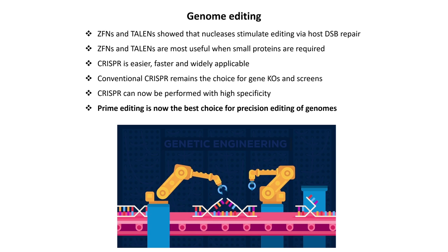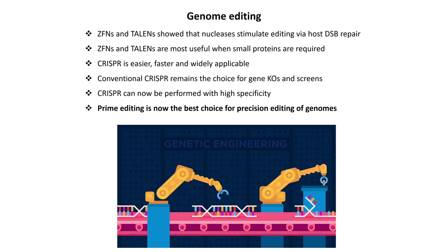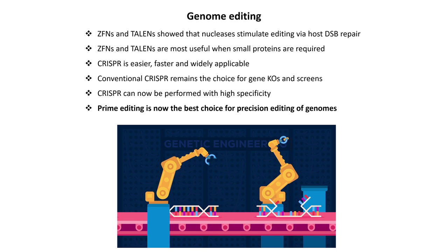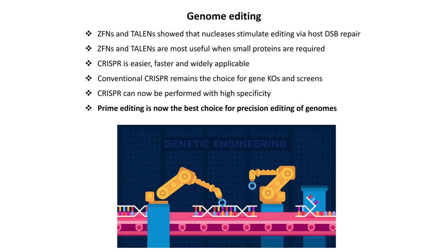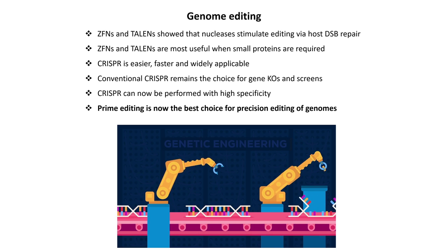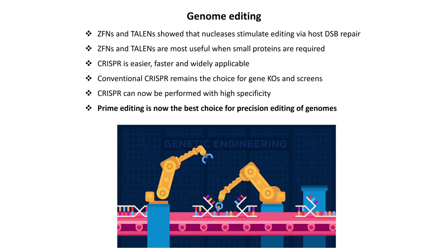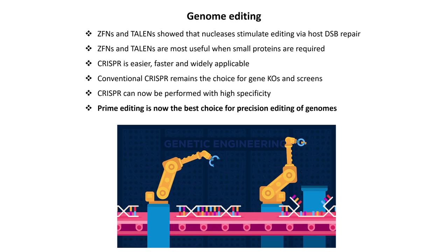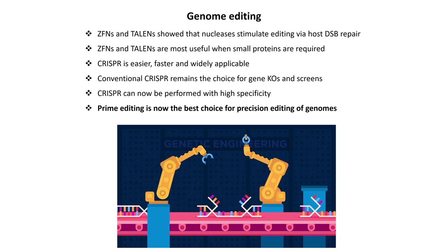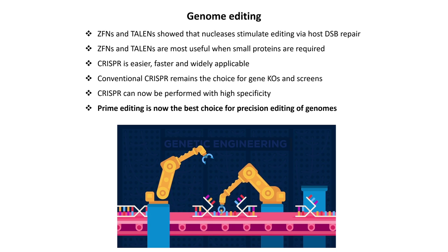In summary: ZFNs and TALENs showed that nucleases can stimulate genome editing in living cells via host double-strand DNA break repair, and they remain most useful when small proteins are required for delivery to primary tissues. For most applications, CRISPR is far easier, faster, and widely applicable. Conventional CRISPR remains the choice for gene knockouts and screens, but CRISPR can now be performed with high specificity, and prime editing is probably the best choice for precision editing of genomes.